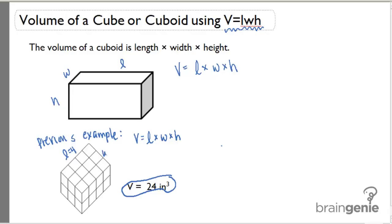The width of this cuboid is three inches, and the height is two inches. So if I do four times three times two, I do get 24, which is the correct answer.